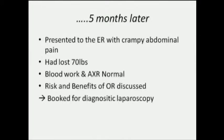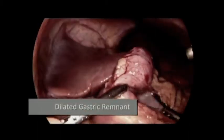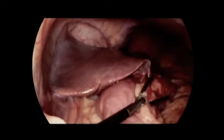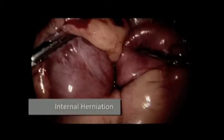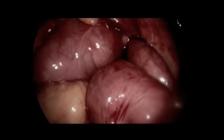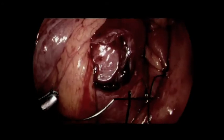Five months following the bypass, our patient presented to the emergency department with crampy abdominal pain. She had lost approximately 70 pounds. We were highly suspicious of an internal hernia and she was therefore taken to the OR. We were quickly able to identify a dilated gastric remnant, which confirmed our suspicion of obstruction. We then identified an internal hernia through Peterson's space.